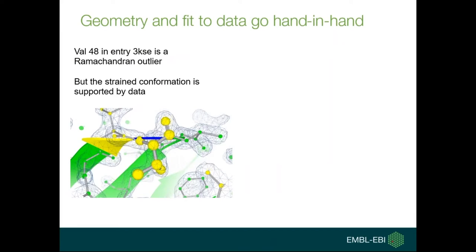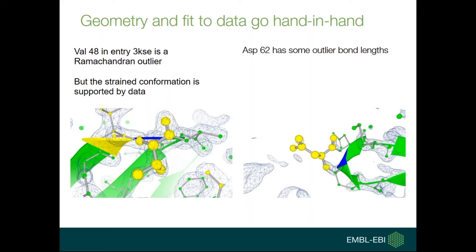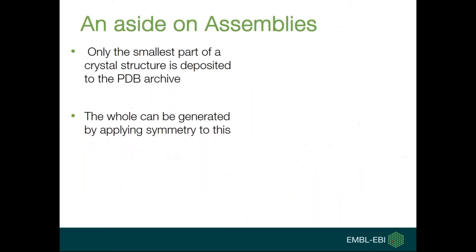It's important to note that geometry and fit to data go hand in hand — you can't assume a geometric outlier means a structure is wrong without looking at supporting data. In PDB entry 3KSE, valine 48 is a Ramachandran outlier, shown as yellow in the validation colouring, but the literature and electron density strongly support that strained conformation. On the other hand, aspartate 62 in the same entry has outlier bond lengths but very poor electron density — those aren't justified by the data and likely represent a slight error in model building.